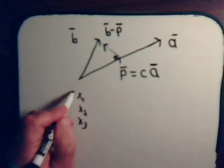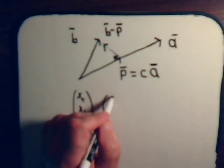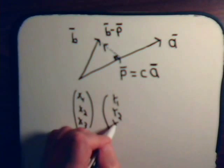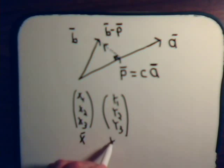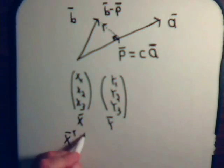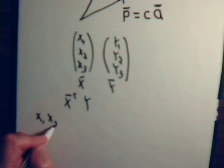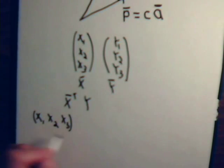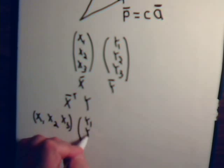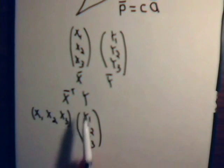When we say they're orthogonal, that means their inner product or dot product is zero. Remember: when we have two vectors X and Y — this works for any dimension — when we take the dot product of them, it is the transpose of X times Y. We write this as a row vector times the column vector Y, then just multiply component by component and add.